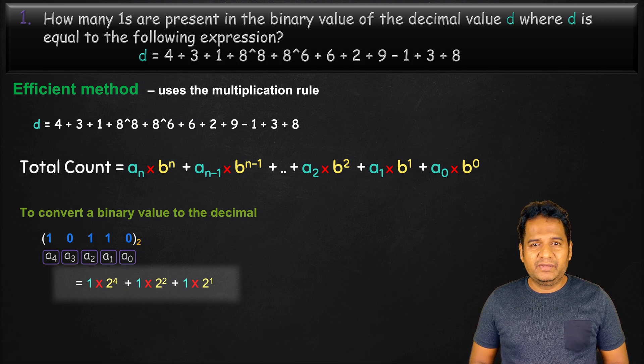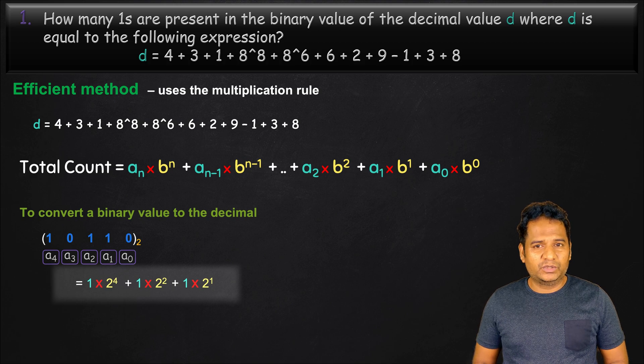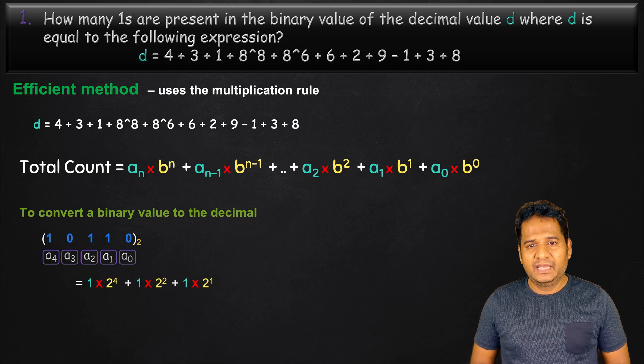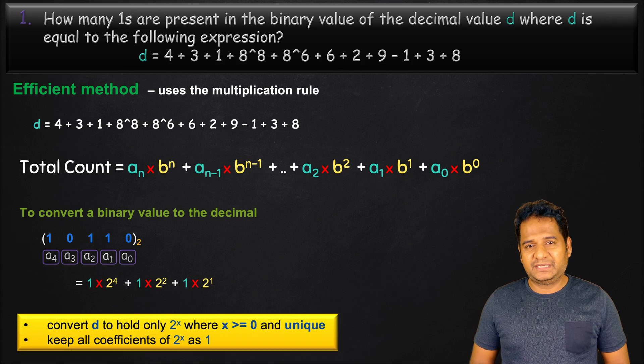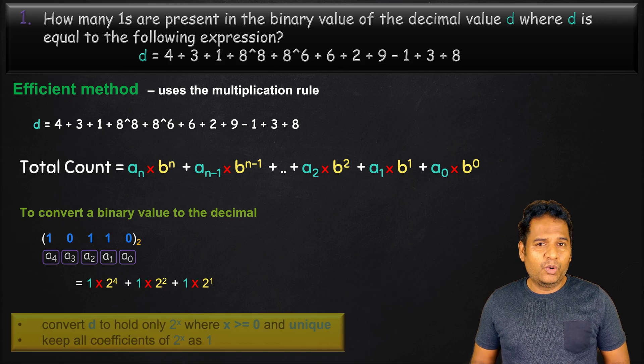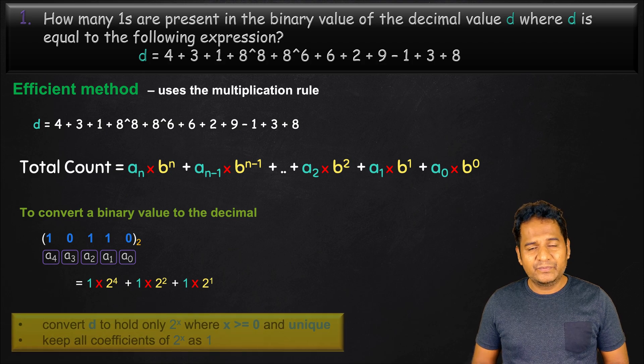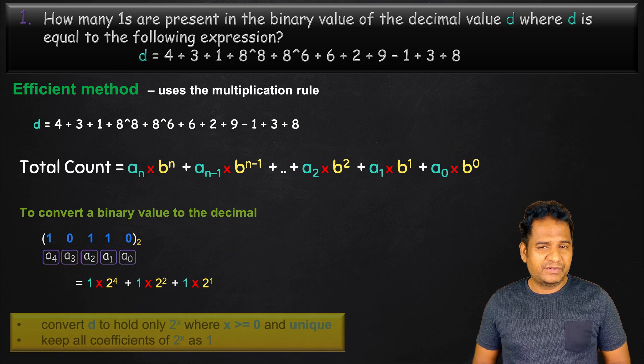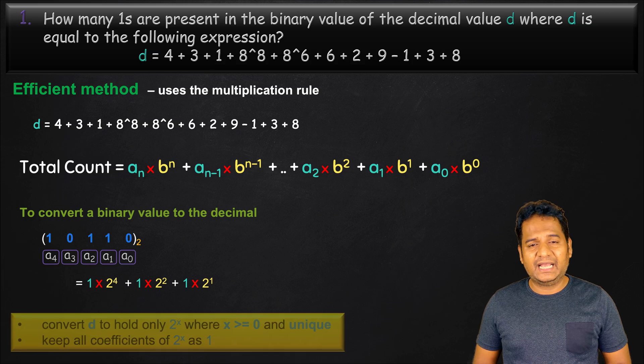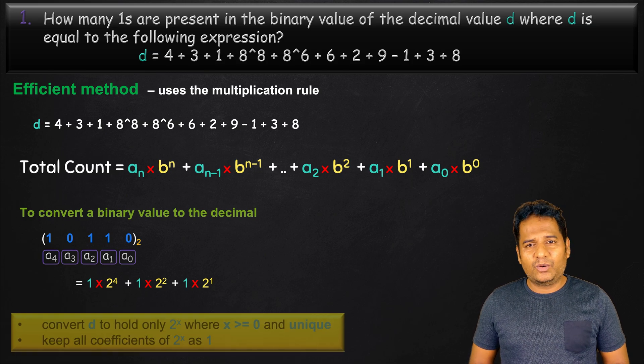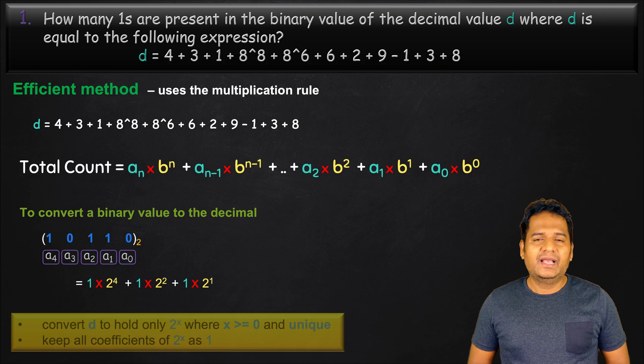For example, we will never have two 2 power 4s when we convert a binary value to decimal. If we are able to convert the expression denoted by d to hold only 2 power x where x is greater than or equal to 0 and unique, and also keep all coefficient of 2 power x as 1, we can easily count the number of 1s. Let's do that.